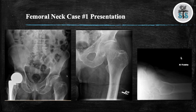Time for the first case of the day. What do you see? We have three views: AP pelvis, AP left hip, and cross table lateral of a left hip, demonstrating a non-displaced and incomplete left femoral neck fracture. How would you treat this type of fracture?